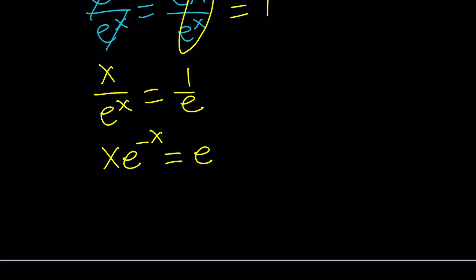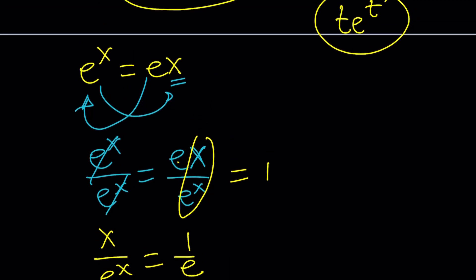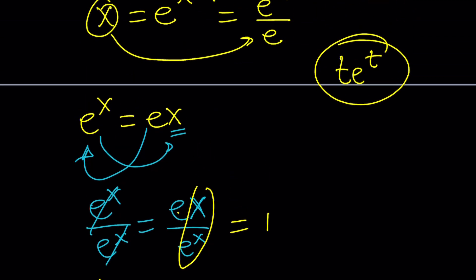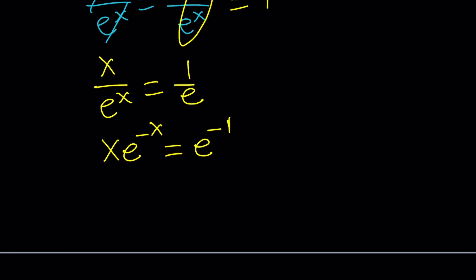And 1 over e, of course, can be written as e to the power negative 1. So we're kind of closer to this form. Not quite there, but we're pretty close. So what we need to do next is do a little bit of manipulation again. So since you want t e to the t, you want these two things to be the same. I have negative x in the exponent, so I do need a negative x. And that can be easily done.